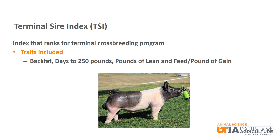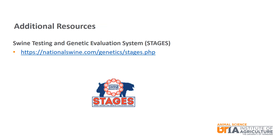Terminal sire index or TSI is an index that ranks for a terminal crossbreeding program. It includes values for back fat, days to 250 pounds, pounds of lean, and feed per pound of gain EPDs relative to their economic values. For more resources regarding EPDs and selection indexes, the Swine Testing and Genetic Evaluation System or STAGES website is the best place to find a much more in-depth review of EPDs. You will also find many more EPDs than what we discussed today.